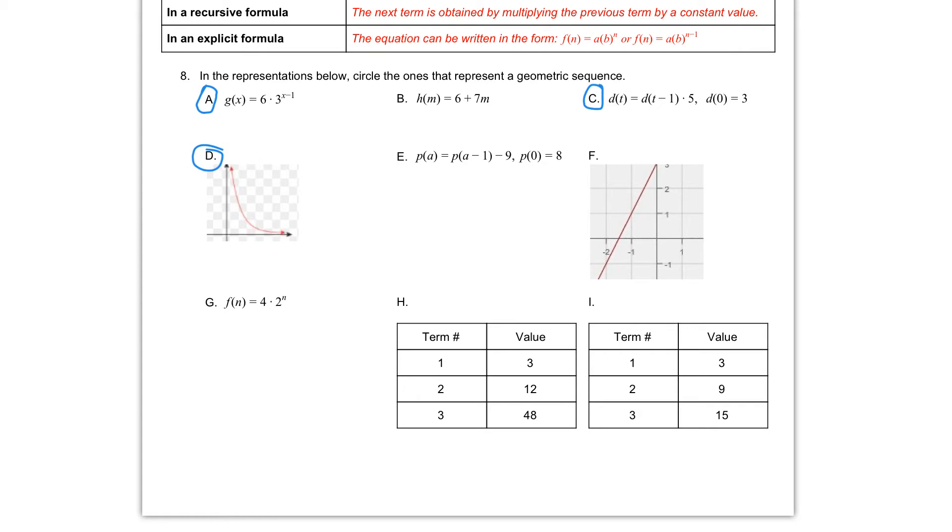In letter E, we have a recursive formula again. We have p of a is equal to p of a minus 1. That's our previous term and we are subtracting 9 each time. And then our first term p of 0 is equal to 8. What we want to pay attention to here is that we are subtracting 9 from the previous term each time. Subtracting 9 indicates an arithmetic sequence. So this is not geometric. So we will not circle E.